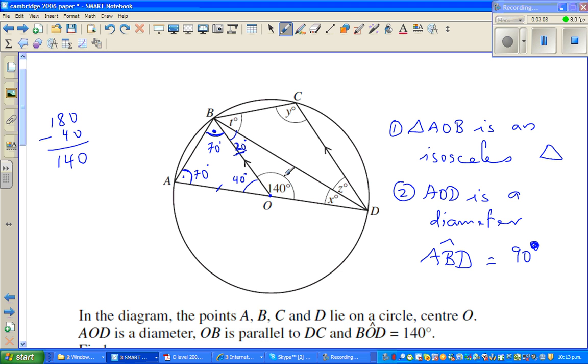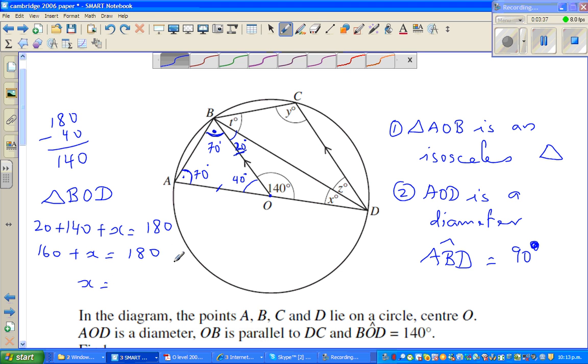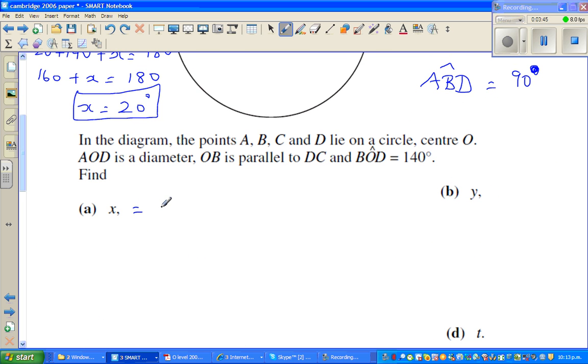So now we can know that in this triangle, I'm talking about triangle BOD. Can I say 20 plus 140 plus X is equal to 180, angles in a triangle. So this is 160 plus X is equal to 180. So X has to be 20 degrees. So X is not 120. X is 20 degrees because we take away 160 from both sides.